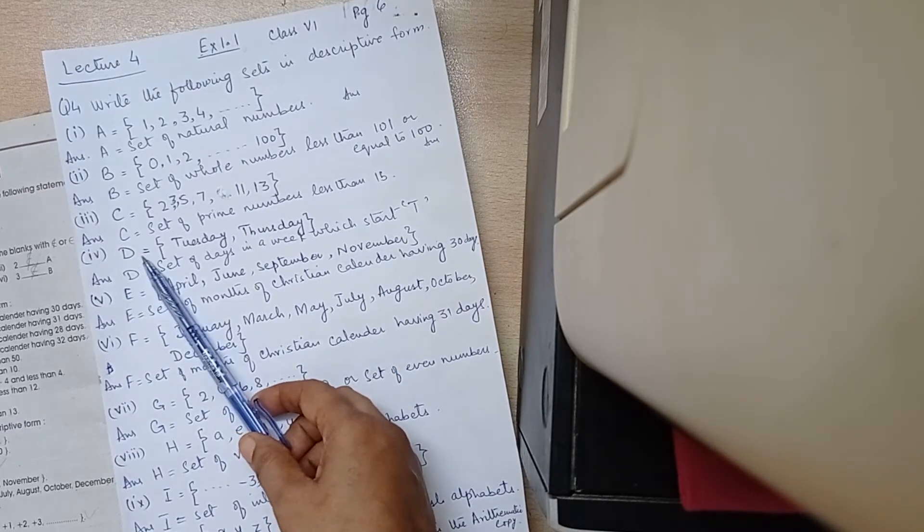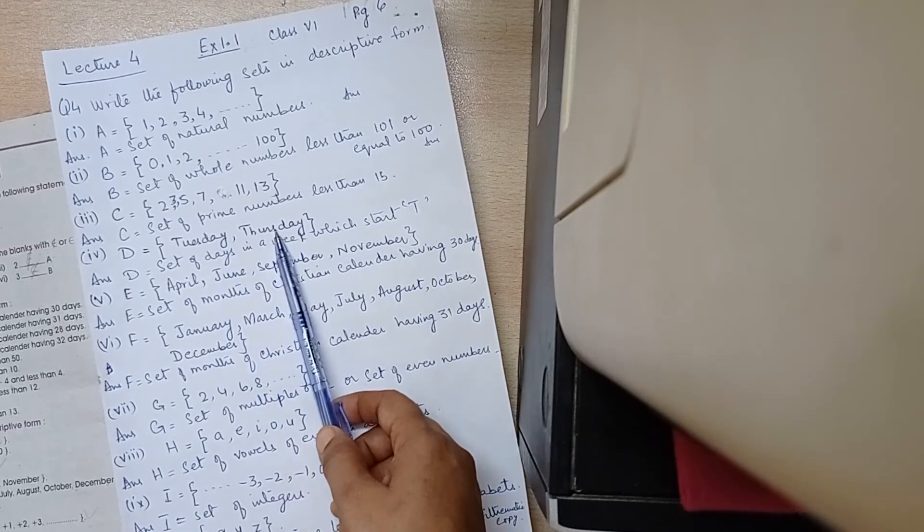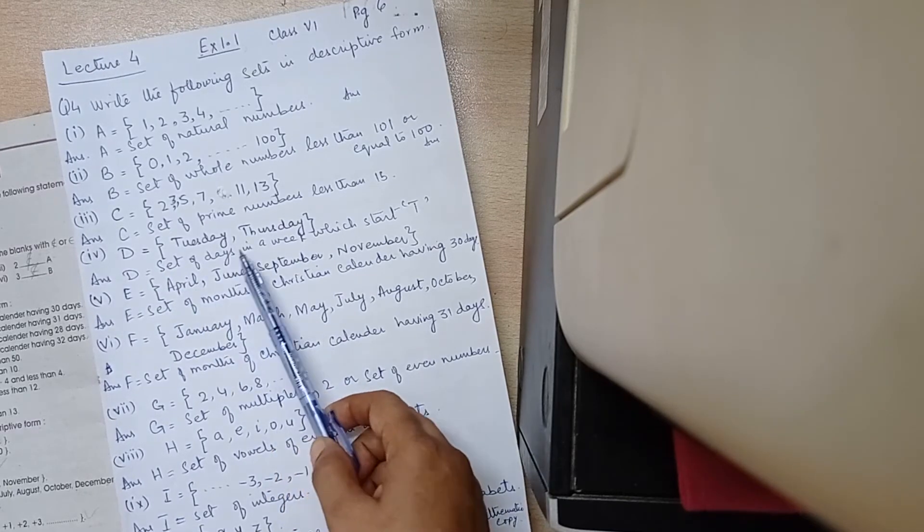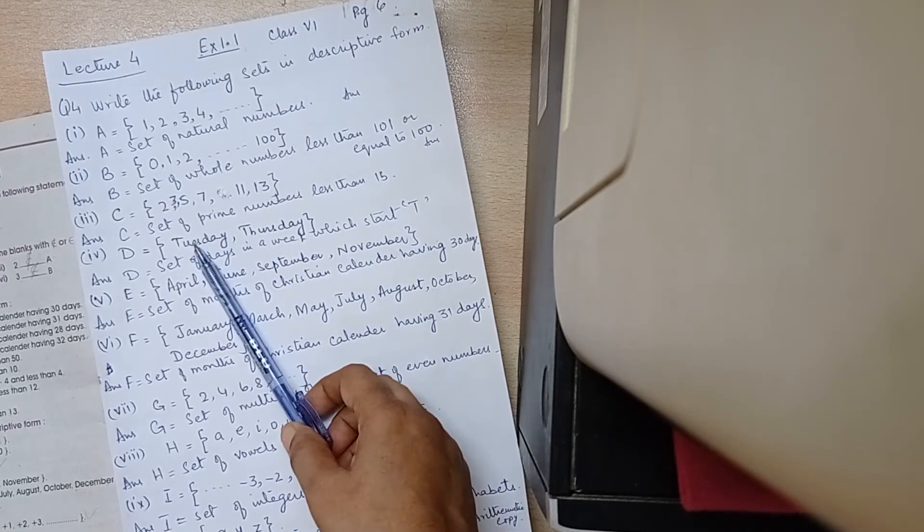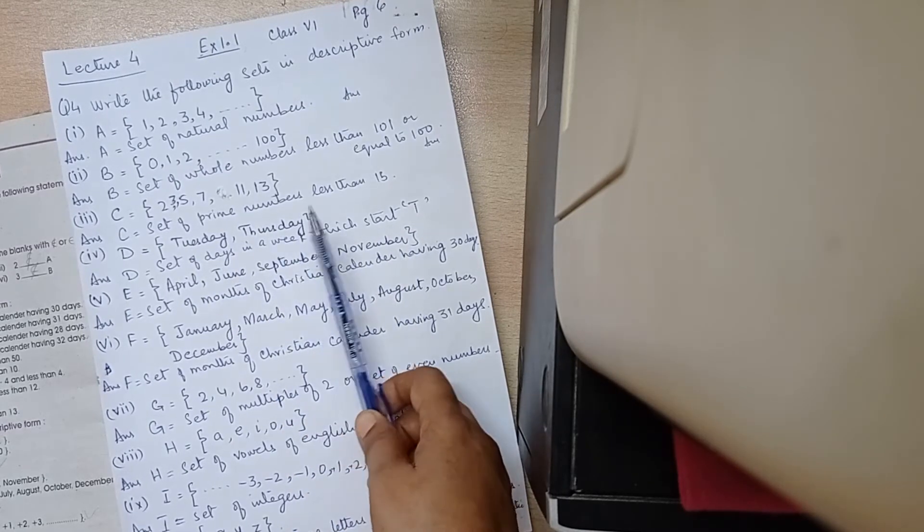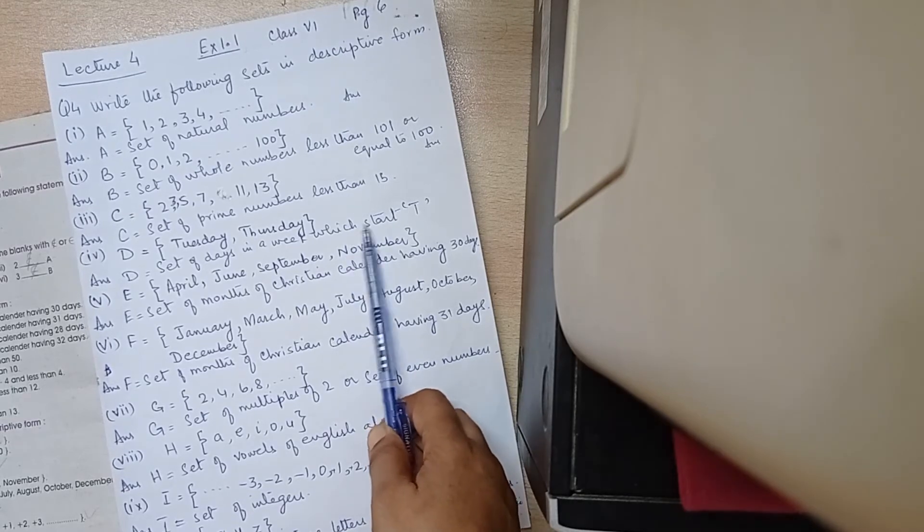Number 4, D is equal to Tuesday and Thursday. D is equal to set of days in a week which start with T. Tuesday and Thursday. How do we write this? This is start T.